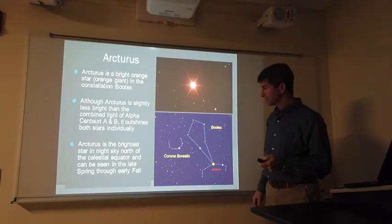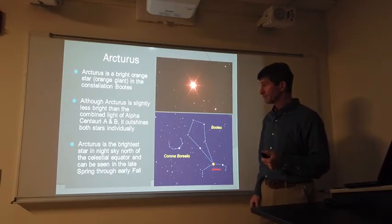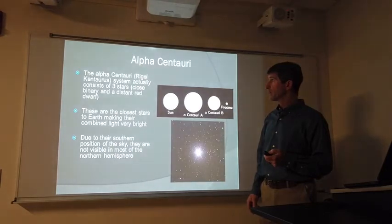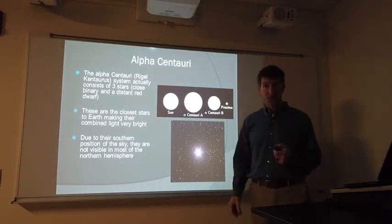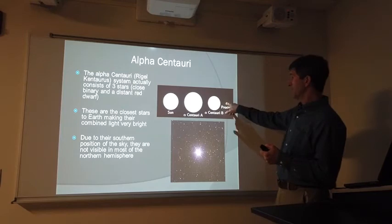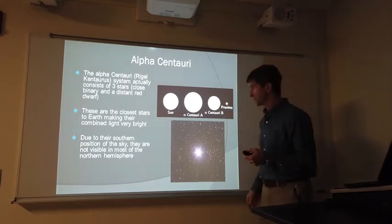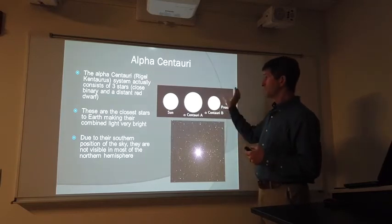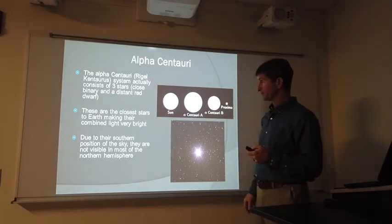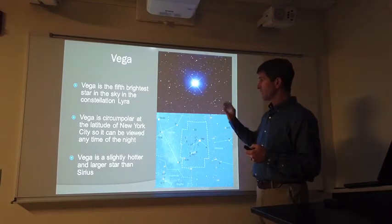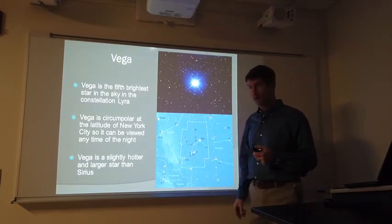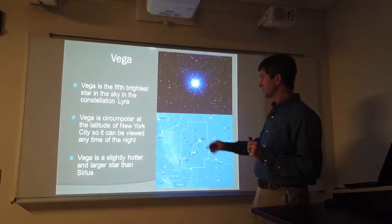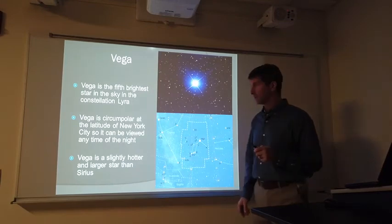Arcturus in the constellation Bootes, quite bright. Alpha Centauri, the closest star system to us. Proxima Centauri is technically the closest star to us in its position. It orbits way far away from Alpha Centauri A and B, but this is a triple star system, not too far from us. Vega, another bright star in the sky. It's in the constellation Lyra. It's a circumpolar star from our location, so it never sets. Vega will always be up in the sky.